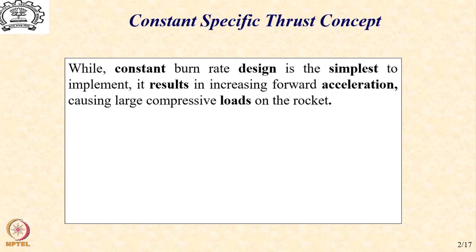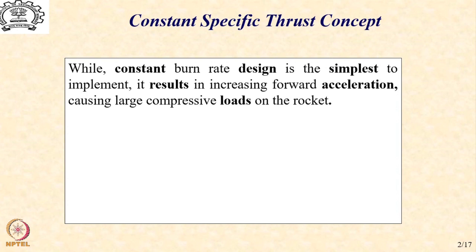As the mass is continuously depleting, as the vehicle becomes lighter and lighter, the same thrust generates a larger and larger forward acceleration. Because the thrust is constant, the same force is acting all the time — even though mass is reducing continuously, the force remains the same. The impact of this is that we continue to get large compressive force on the rocket at all points on the trajectory.